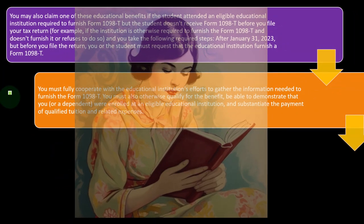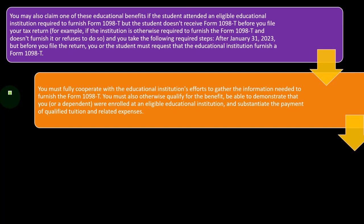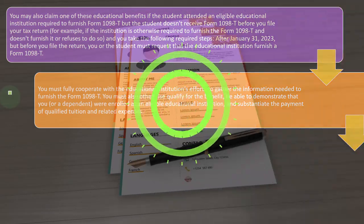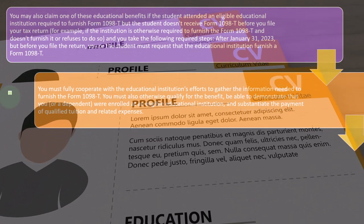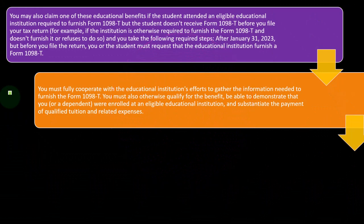You must fully cooperate with the educational institution's efforts to gather the information needed to furnish the Form 1098-T. If the institution says they can't do it because you won't provide your address or contact information, that's on you — you need to give them the information necessary to process the Form 1098-T. You must also otherwise qualify for the benefit, be able to demonstrate that you or a dependent were enrolled at an eligible educational institution, and substantiate the payment of qualified tuition and related expenses.